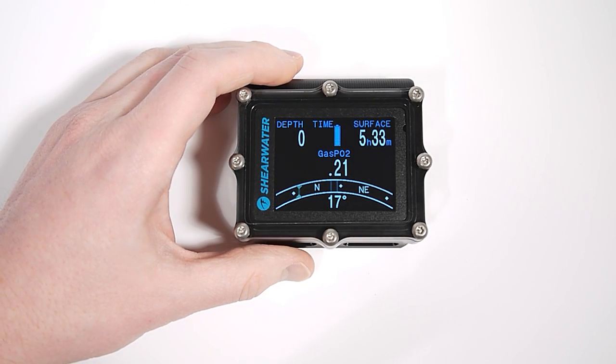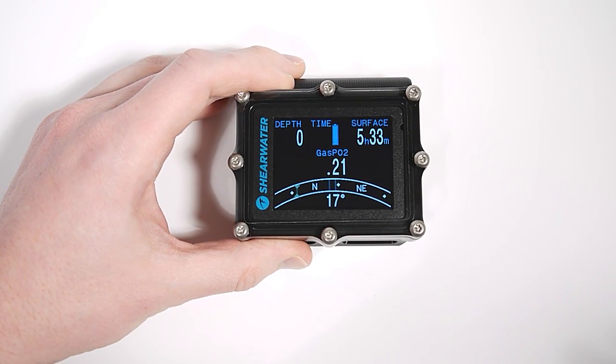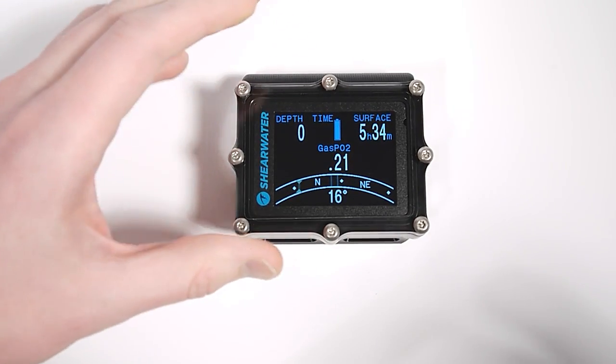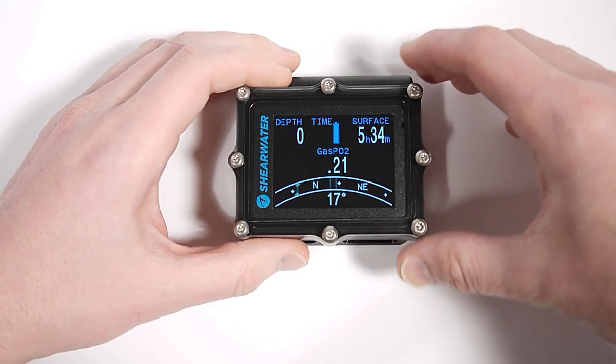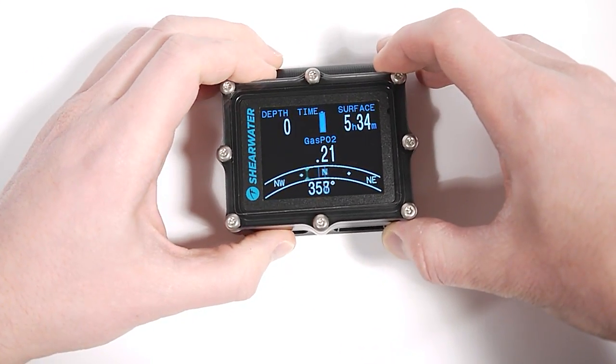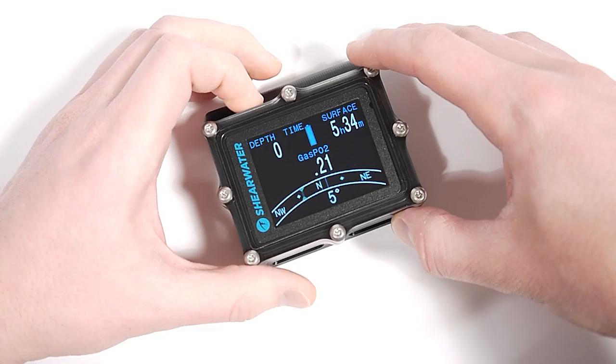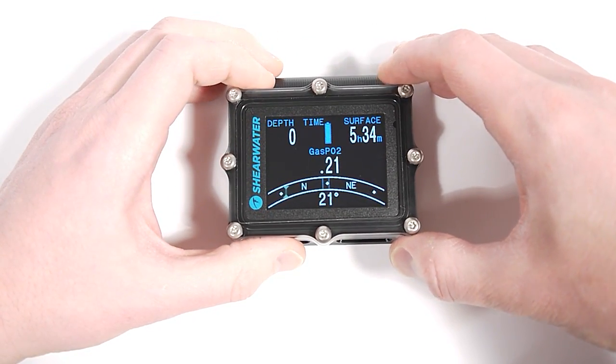So, make sure you calibrate. Make sure you stay away from large ferromagnetic objects or permanent magnets. Those will affect any compass. And you have to be aware of those limitations when using a compass. Otherwise, we hope it helps with your diving and that you find it a useful feature. Thank you.